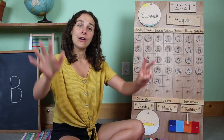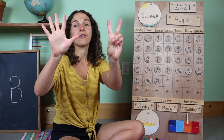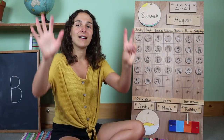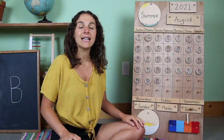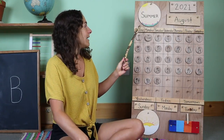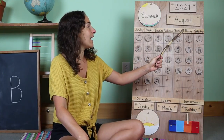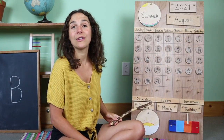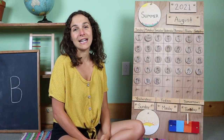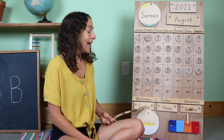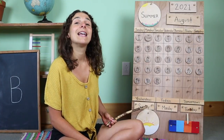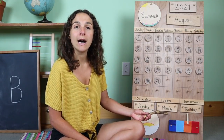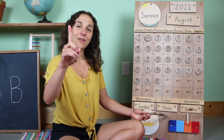Now let's sing the days of the week song together. For this song, we hold up our seven fingers for each one of the seven days of the week. And if you know the words to this song, you can sing along with me. There are seven days, there are seven days, there are seven days in a week. Sunday, Monday, Tuesday, Wednesday, Thursday, Friday, Saturday. Yesterday was Sunday, the last day of the weekend. So that means that today is Monday, the first day of the weekday.